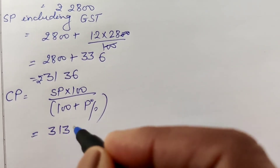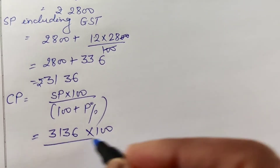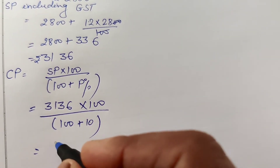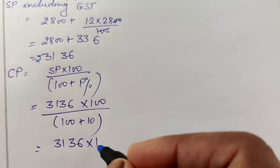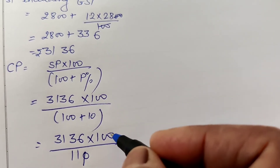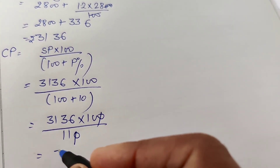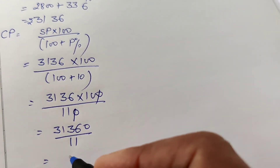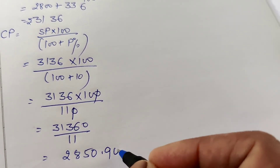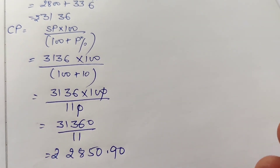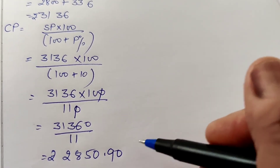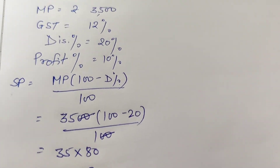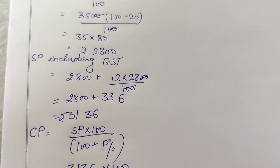The formula for cost price is: CP = SP × 100 divided by (100 plus profit percent). Selling price is 3136, so CP equals 3136 × 100 divided by 110. Cancelling the zero, we get 31360 divided by 11, which gives approximately rupees 2850 and 90 paisa. This is the complete solution of this question from profit, loss and discount.